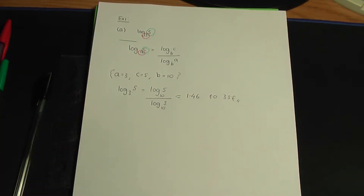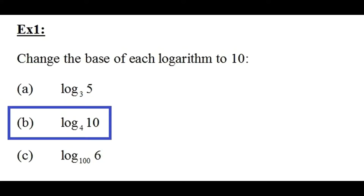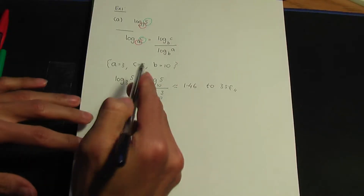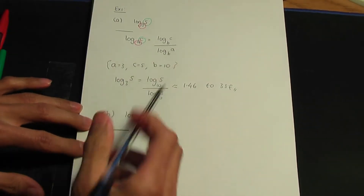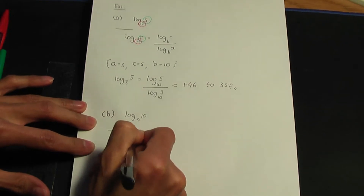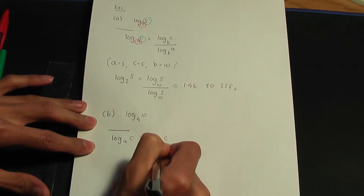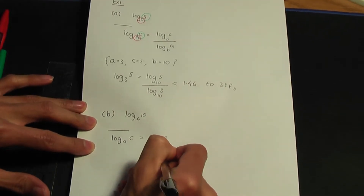Going back to the screenshots, here is part b. Part b is to do the same for log of 10 to the base of 4 — we need to change the base of this logarithm to a base of 10. Let's use the change of base rule again: log of c to the base of a is the same as log of c to the base of b over log of a to the base of b.